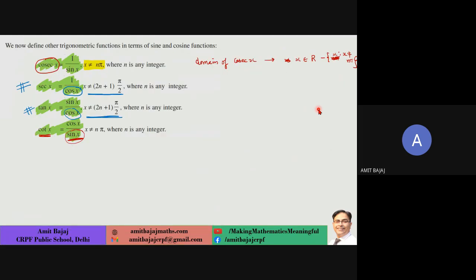We also discussed domain and range. For cosec x = 1/sin x, it is defined only when the denominator is non-zero, so x cannot be nπ — the domain is all real numbers except multiples of nπ, i.e., ℝ minus the set of multiples of nπ. Similarly you can determine the domain and range of other trigonometric functions. Stop me wherever you have a doubt.